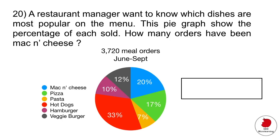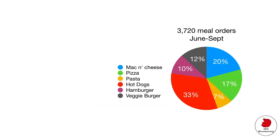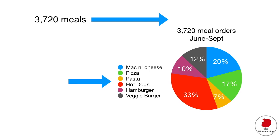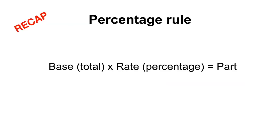Question 20 involves interpreting a circle graph. A restaurant manager tracks which dishes are most popular. The pie graph shows percentage of each dish sold, and the question asks how many orders were mac and cheese. The title says 3,720 total meals were sold between June and September. Mac and cheese is 20%. Using the percentage rule — multiply 3,720 by 20% — gives 744 mac and cheese orders.